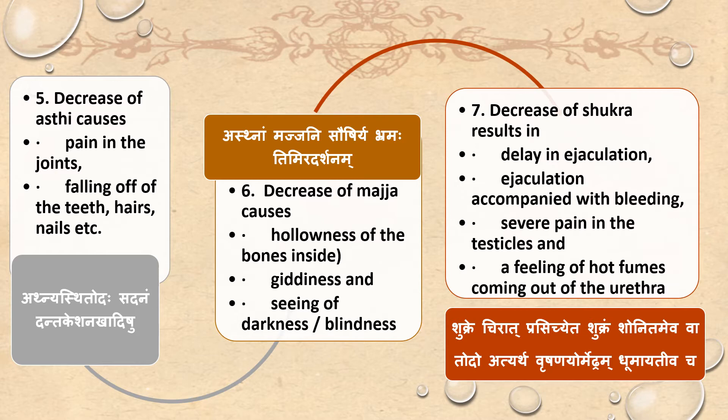Shukre Shiraha, Prasichet, Shukram Shonitam Eva Cha. Todaha, Atyartha Vrishana, Yoho, Mutra, Dhooma Adiva Cha. Decrease of Shukra results in delay in ejaculation, ejaculation accompanied with bleeding, severe pain in the testicles, and a feeling of heat/fumes coming out of the urethra.